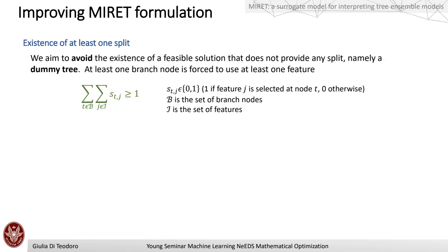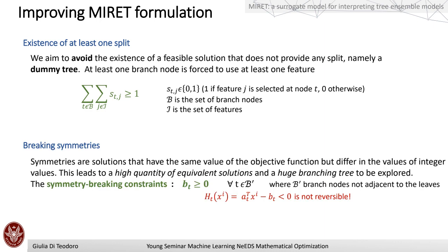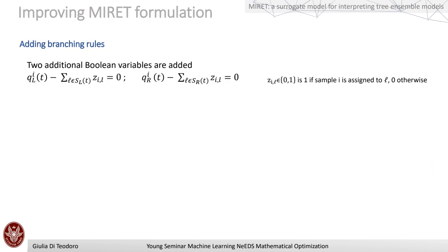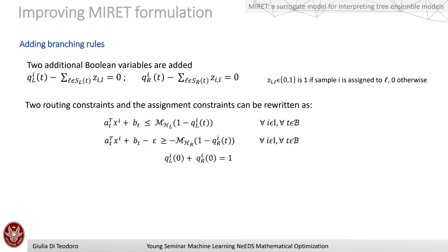We tried to improve the formulation by adding constraints to restrict the feasible space of solutions. In particular, we added a constraint to avoid dummy trees — enforcing the existence of at least one split. We also added constraints to break symmetries — where symmetry solutions have the same objective value but different integer variable assignments. We also added branching rules through Boolean variables through which the assignment and routing constraints are written.